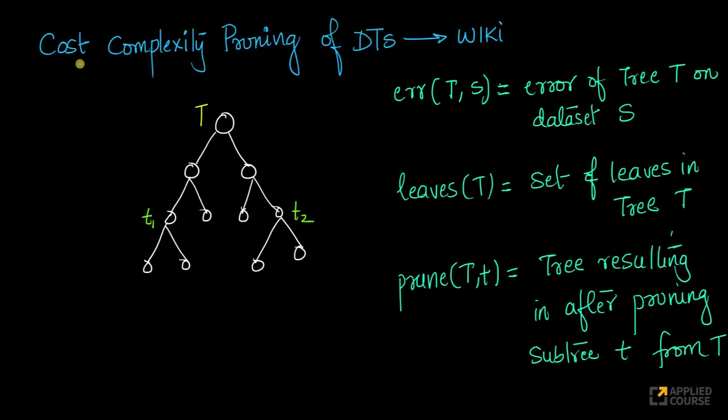Hi, I believe your question was about when you're computing cost complexity pruning of decision trees. Imagine you have a decision tree like this. Typically pruning happens bottom up because you're most likely overfitting. In cost complexity pruning, you're trying to reduce the number of leaf nodes.